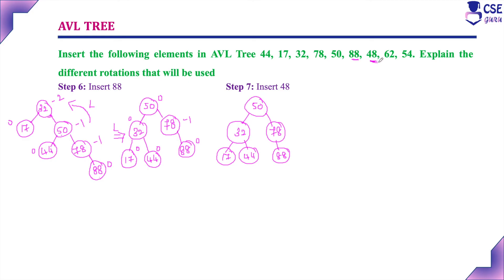Insert element 48. Since 48 is less than 50, go left to 32; greater than 32, go right to 44; greater than 44, so attach as right child of 44. Check balance factors: all leaf nodes are 0; node 44 is -1; node 32 is 1 minus 2 = -1; node 78 is -1; root node 50 is 3 minus 2 = +1. The tree is balanced — no rotation needed.